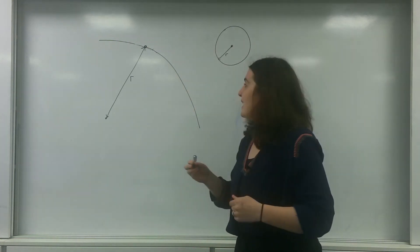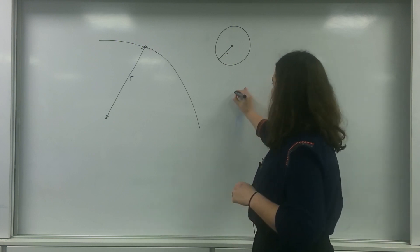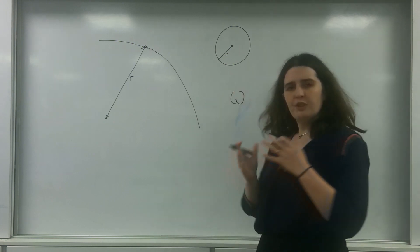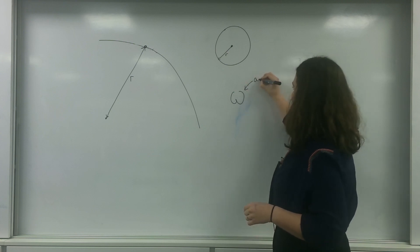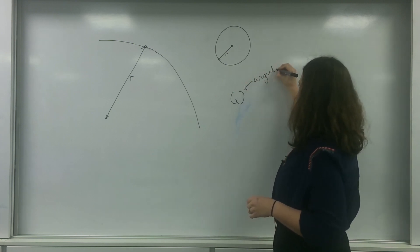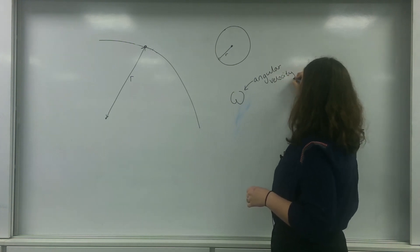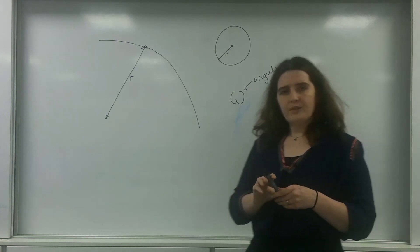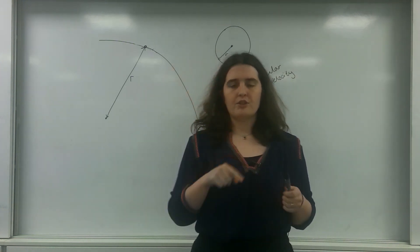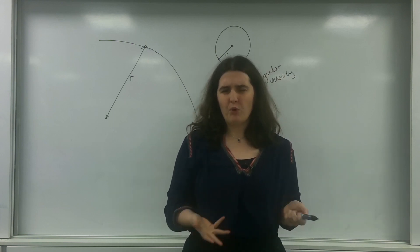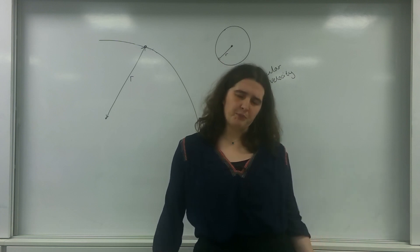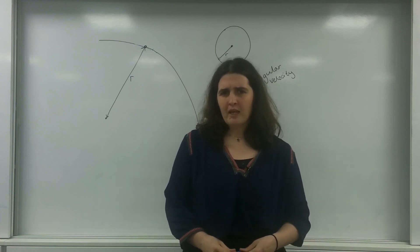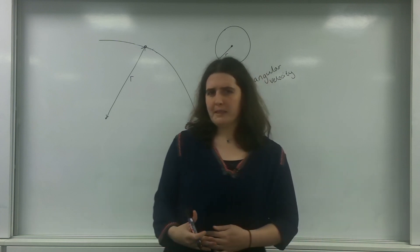Today I'm going to talk about this letter called omega. It's a curly sort of W, and this is the letter we use for angular velocity. It's the velocity associated with going round in a circle. You've probably heard of it before — like RPM, revolutions per minute, or RPS, revolutions per second — but probably not mathematically.